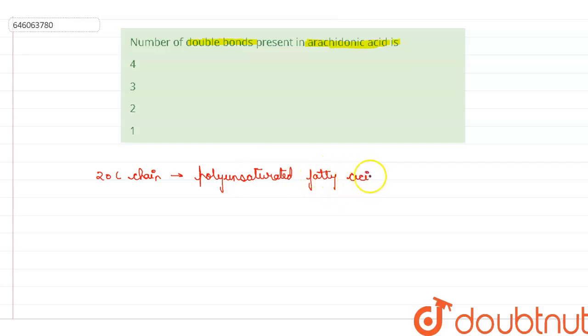So it is that. Now it has what? As I told you, it's a carboxylic acid, that means it has 20 carbon chain, and it also has four double bonds.